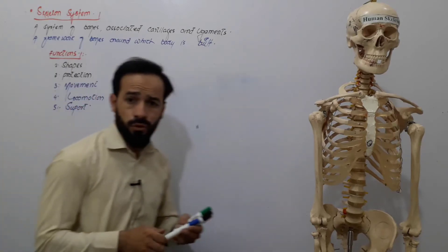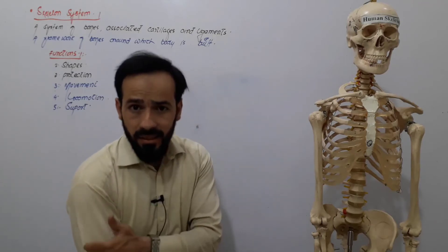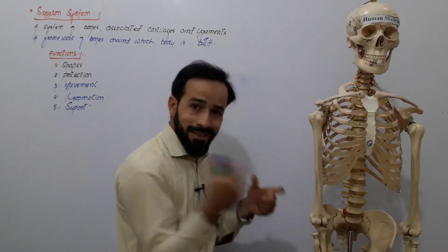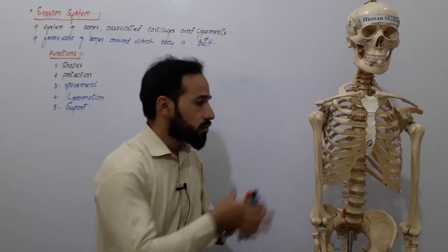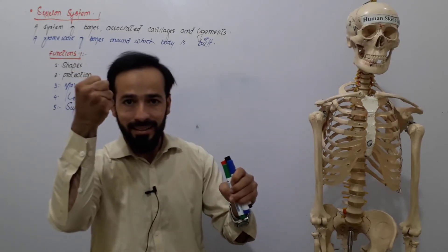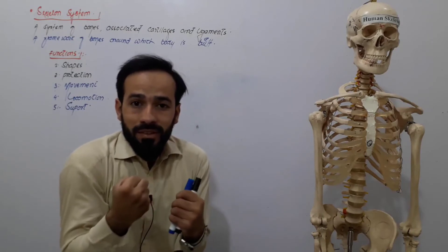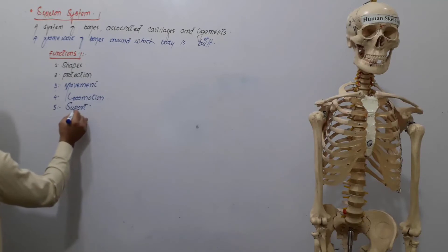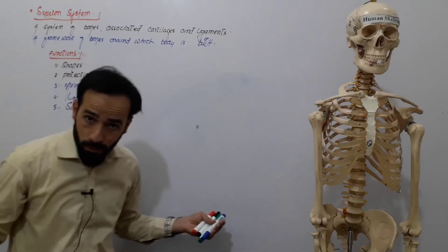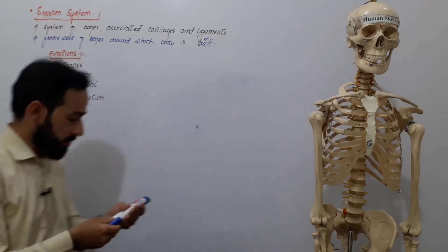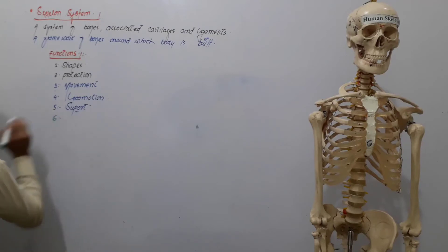Another important function is support. The skeletal system gives support to our skeletal muscles and certain tendons. The skeletal muscles are built entirely around the skeleton, so if the skeleton were removed, there would be no support for the muscles. Therefore, the skeletal system provides support to different body parts.